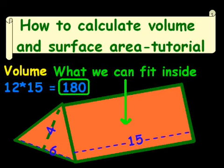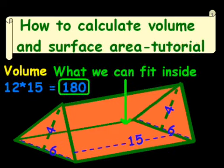Essentially, what we've got here is the area of this triangle, which is 12, and the length of this, which is 15, and that gives us our total volume, which is 180. That volume is what we can fit inside, and that is conceptually how I would tackle a volume problem on this.